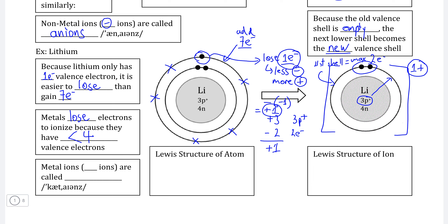The technical term for metal ions that lose electrons and become positively charged is cations — as opposed to anions, which describe non-metal ions that gain electrons and become negatively charged. Note that the word 'cation' is pronounced as two distinct syllables: cations.